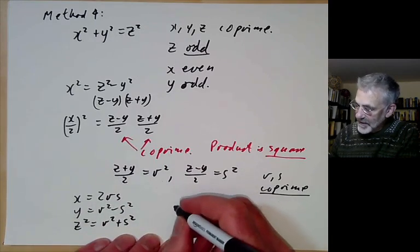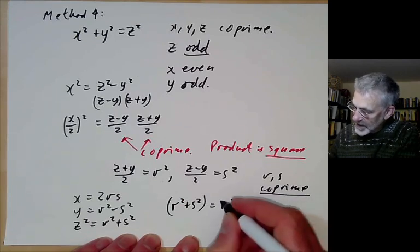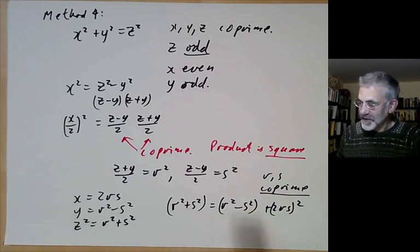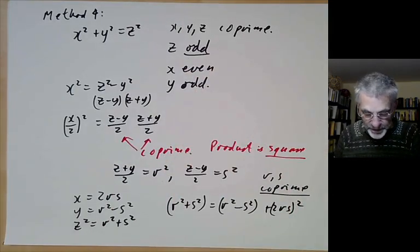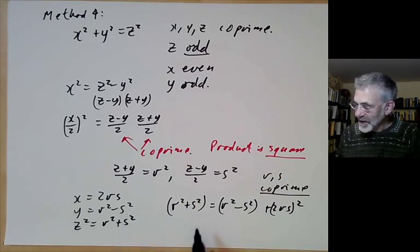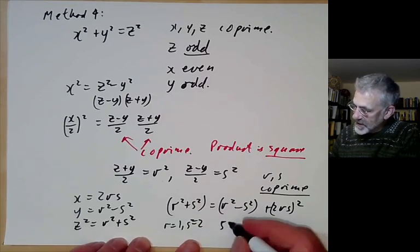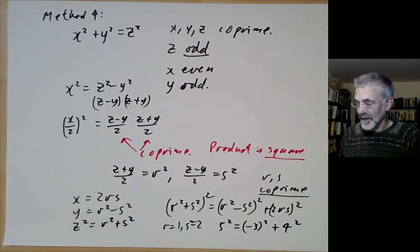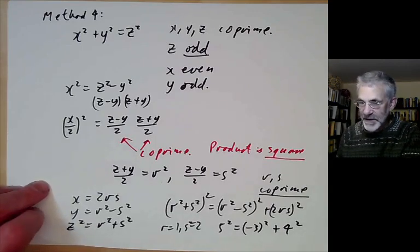This comes from the algebraic identity (r squared plus s squared) squared equals (r squared minus s squared) squared plus (2rs) squared. We can take small values of r and s — for instance, r equals 1, s equals 2 gives 5 squared equals minus 3 squared plus 4 squared, which is the basic solution. You can take any integers r and s to generate lots of other solutions.